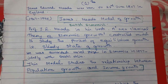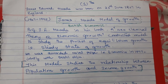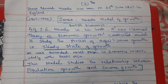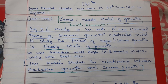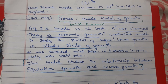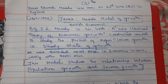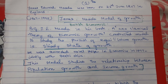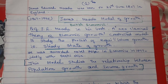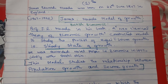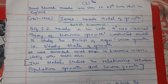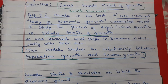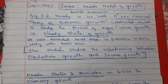Hello children. Today we will see James Meade's model of growth. James Meade was a British economist. He was born on 23rd June 1907 in England. His time period ranges between 1907 to 1995.